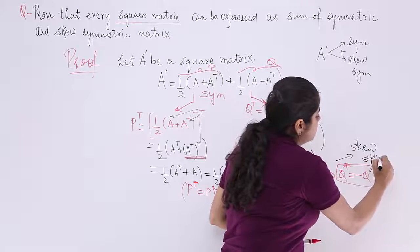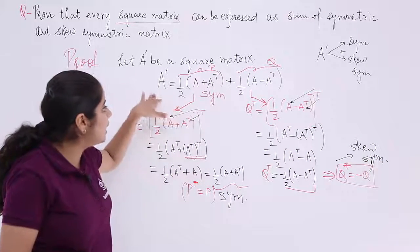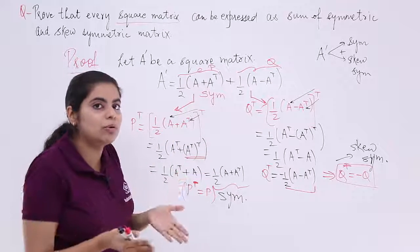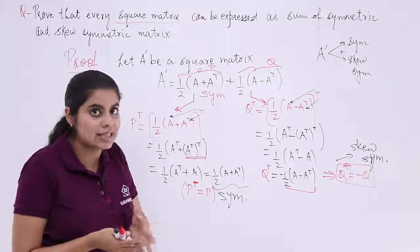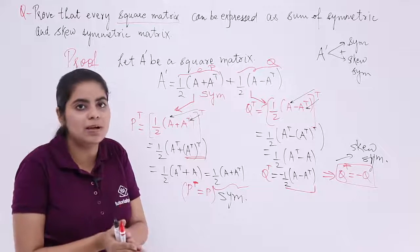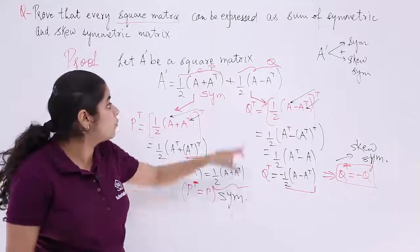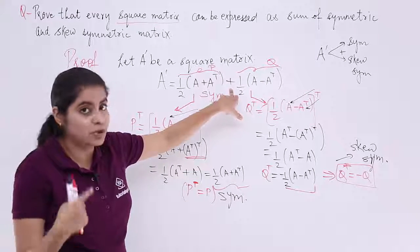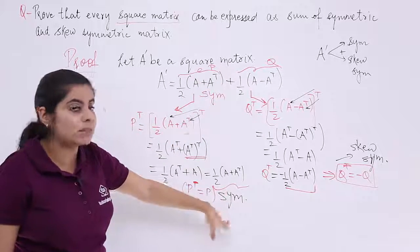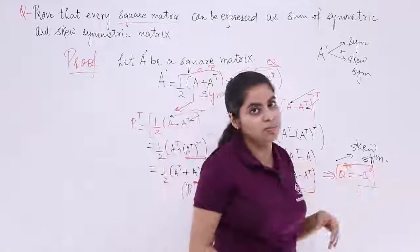That means we started with a square matrix and proved that yes, every square matrix can be expressed as the sum of one matrix which is symmetric and another matrix which is skew symmetric. Thank you, I'll see you next time.